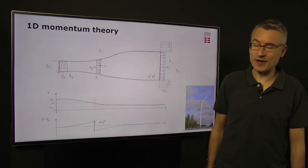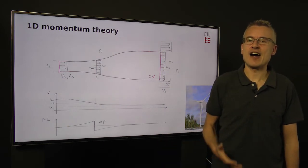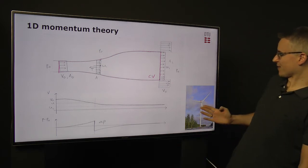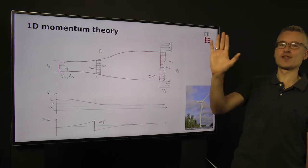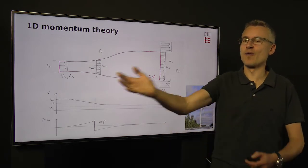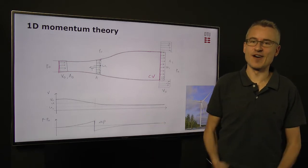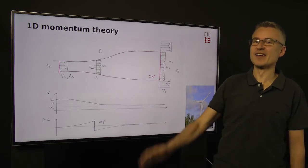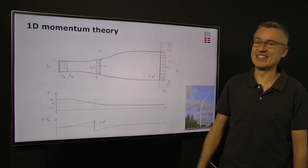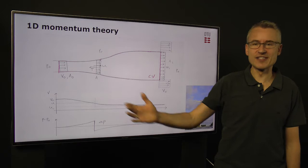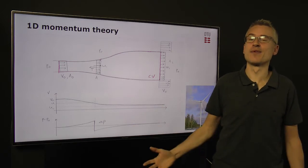We will look at the 1D momentum theory to analyze how much power can you actually extract from the wind. Because if we think of it, we could try to block all of the wind, but that would also mean that no more wind would come through to us, and we would have zero energy. The other side is to extract no energy at all, then we wouldn't break the wind, but no energy. So there is some optimum in between. That's the optimum we want to find.